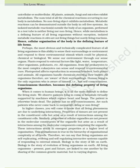Perhaps the most obvious and technically complicated feature of all living organisms is the ability to sense their surroundings or environment and respond to environmental stimuli — which could be physical, chemical or biological. We sense our environment through our sense organs. Plants respond to external factors like light, water, temperature, other organisms, and pollutants. All organisms, from prokaryotes to the most complex eukaryotes, can sense and respond to environmental cues. Photoperiod affects reproduction in seasonal breeders, both plants and animals. Human beings are the only organisms aware of themselves, i.e., having self-consciousness. Consciousness, therefore, becomes the defining property of living organisms.